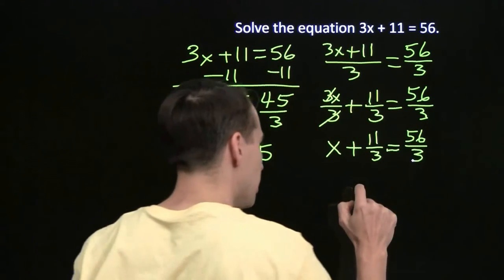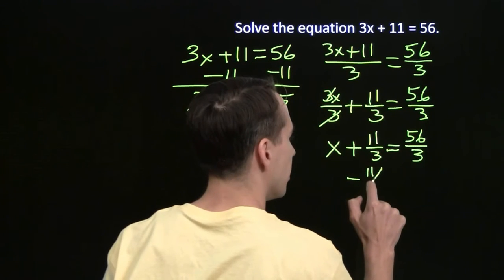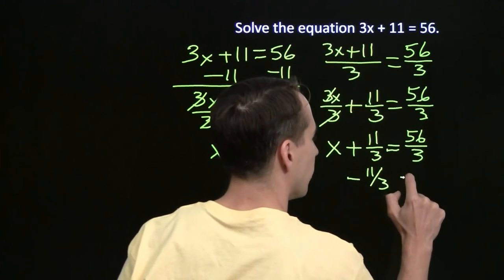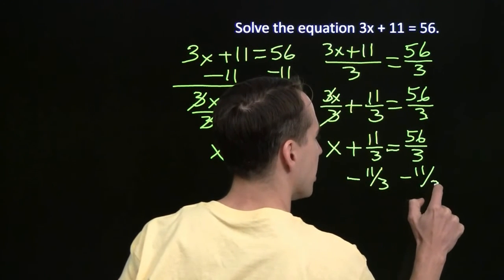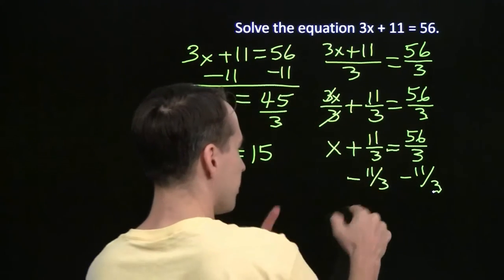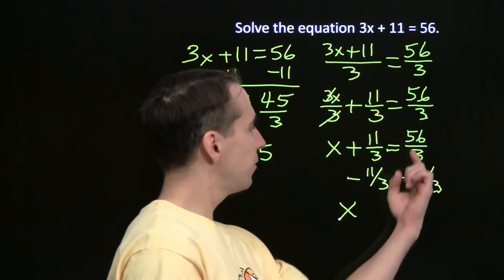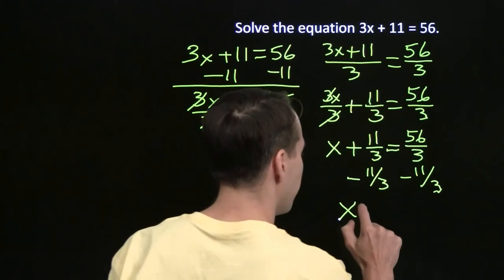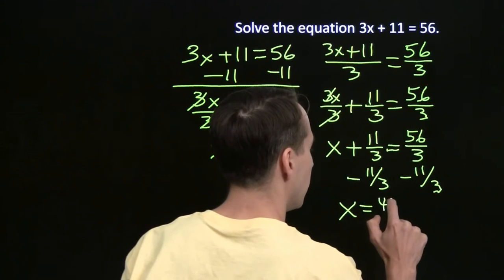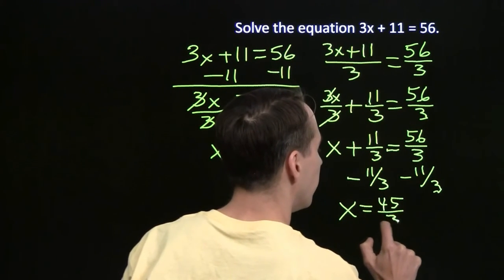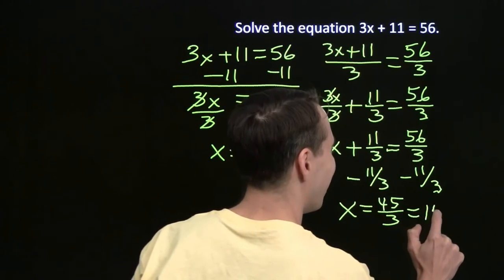And we know how to deal with this. We just subtract off the 11 thirds to isolate x over here. We subtract 11 thirds from both sides. And on the left side, we're just left with x. 56 minus 11 is 45 over 3. And that looks familiar. 45 over 3 is 15.